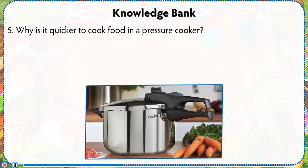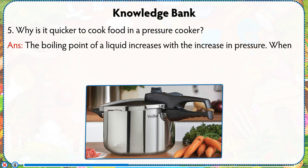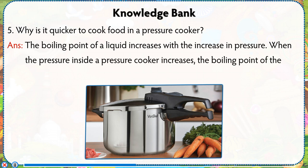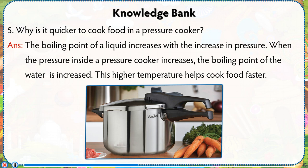Number 5: Why is it quicker to cook food in a pressure cooker? Answer: The boiling point of a liquid increases with the increase in pressure. When the pressure inside a pressure cooker increases, the boiling point of the water is raised. This higher temperature helps cook food faster.